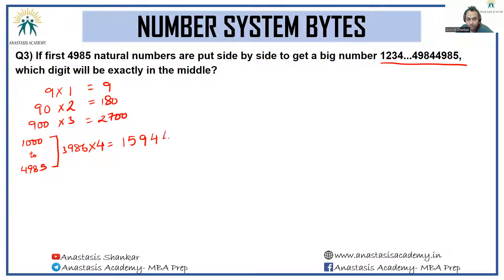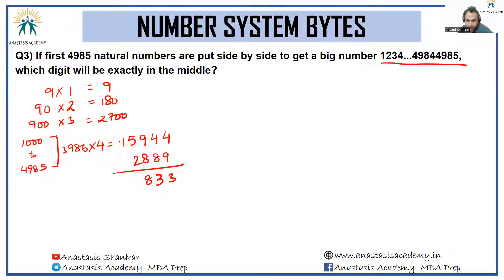Adding all digit counts: 9 + 180 + 2700 + 15944. Working it out: 2889 from the first three groups, then adding 15944 gives a total of 18,832 digits. Let me verify: carrying over gives 1, 8, 8, 3, 2.